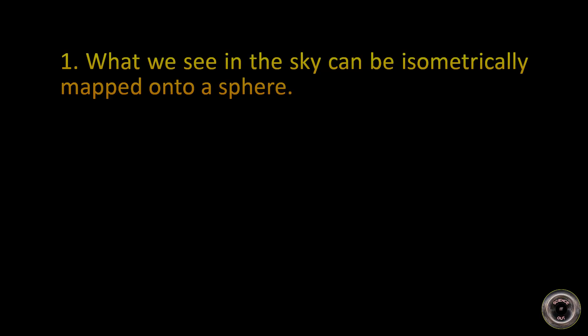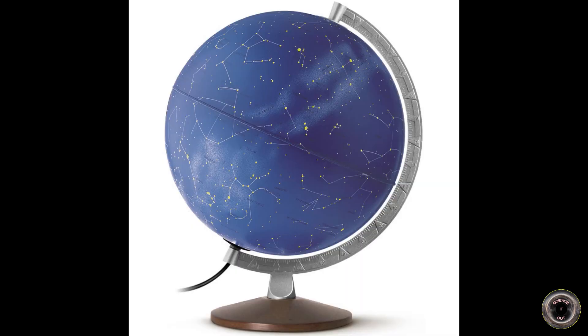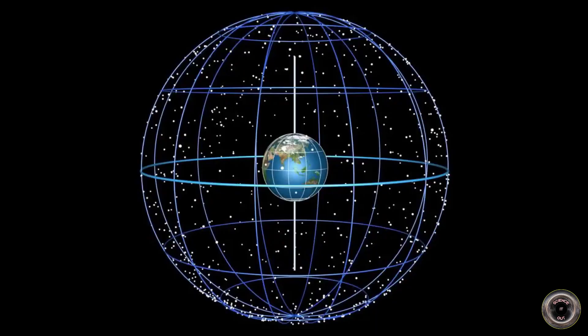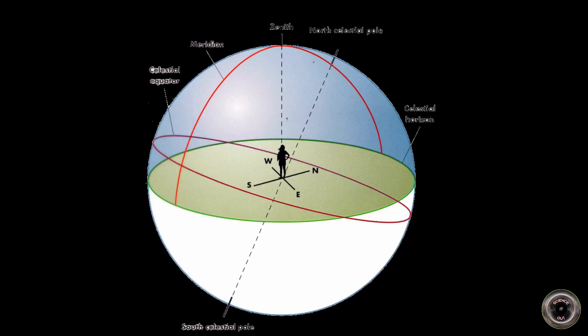I am going to clearly state three assumptions and then show you exactly what they imply. The assumptions will hopefully not be too controversial — I believe even most flat earthers usually agree with them. The conclusions will be a bit of a different story though. Assumption 1: what we see in the sky can be isometrically mapped onto a sphere. Have you ever heard of the celestial sphere or seen a globe of the night sky? Those illustrate this assumption perfectly. We can imagine a sphere surrounding us and map all the stars we see in the night sky onto that sphere. A single observer only sees roughly half of that sphere at once, but if multiple observers team up, they can find that the halves they see fit together and cover the whole sphere in a collective effort.